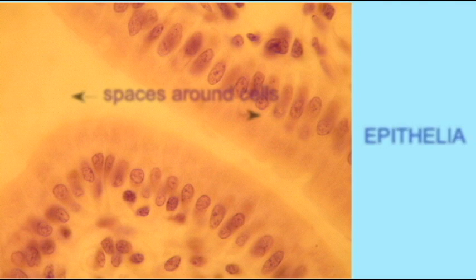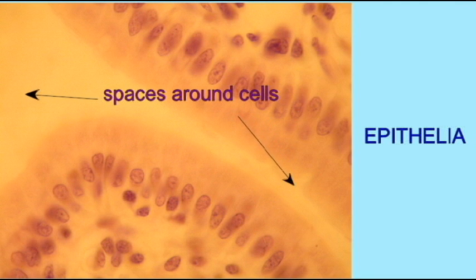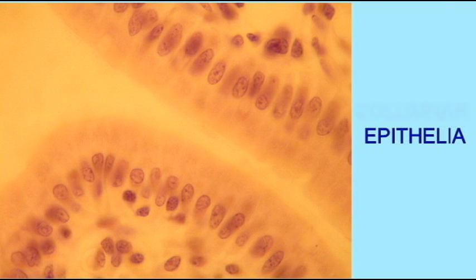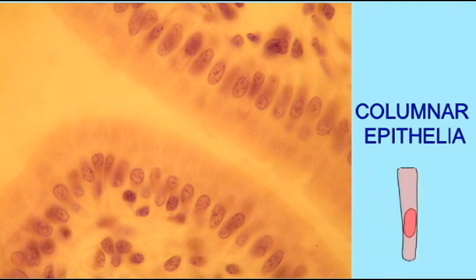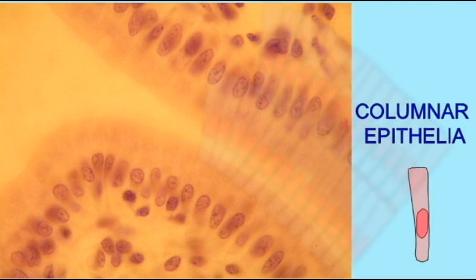This image is of simple columnar epithelia of the small intestine. It is epithelia because you can see the spaces around the cells. This is the lumen of the small intestine, and epithelia line the tracks which exit the body. These are columnar cells — they are tall and rectangular, and their nucleus is elliptical, or oblong, instead of being circular.